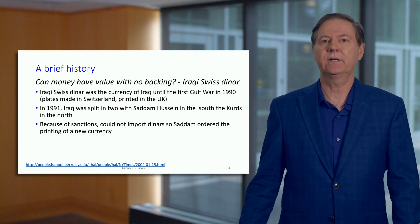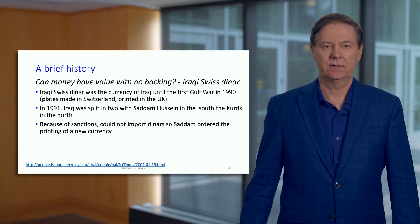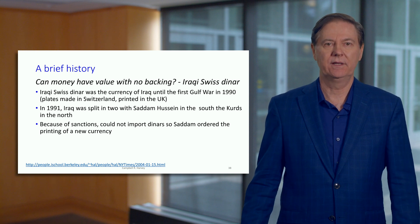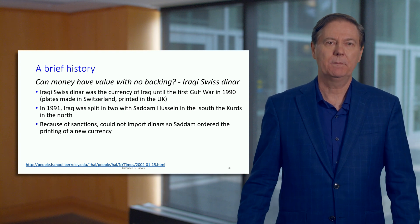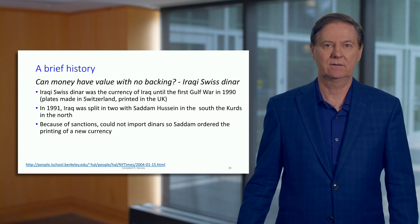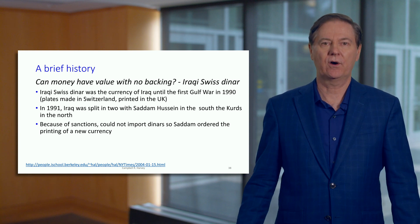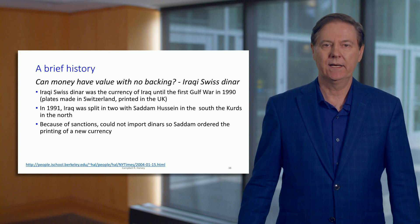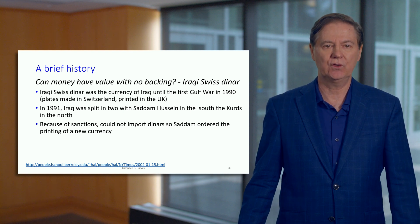Iraq and Saddam Hussein had outsourced the printing of the dinar. It's called the Iraqi Swiss dinar because the printing plates were manufactured in Switzerland, and the actual production and printing of the currency was done in the UK. In 1991, at the end of the war, Iraq was split into two pieces.